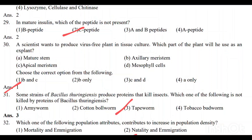Question number 30: When a scientist wants to produce a virus-free plant in tissue culture, the meristem is used as an explant. Options 1 and 4 are the correct answers.